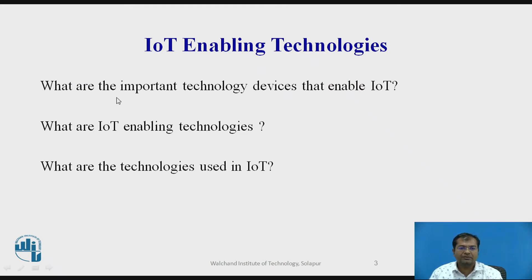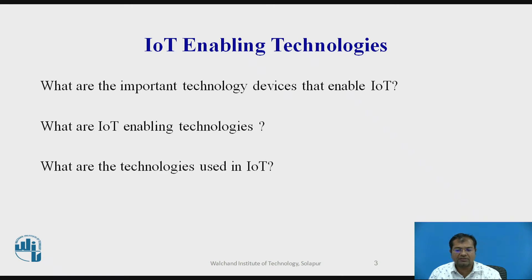What are the important technology devices that enable IoT? The important technology devices are like wireless sensors, actuators, and other computer devices. Along with this, the internet and software.